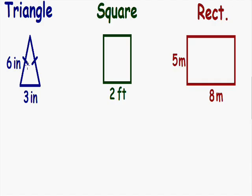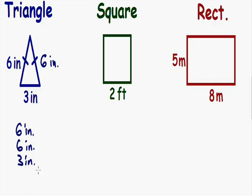So if the left side of the triangle is 6 inches, we know that the right side of the triangle is also 6 inches. To find the perimeter, we add all the sides: the left side is 6 inches, the right side is 6 inches, and the bottom side is 3 inches. So our perimeter is equal to 6 plus 6, which is 12, and 12 plus 3, which is 15 inches.